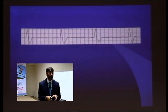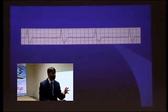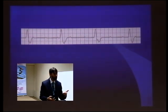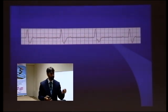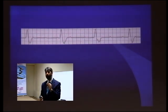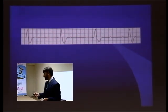Always judge when assessing AV block: is the QRS narrow or broad? Narrow means the AV node is the escape focus, and broad means the ventricle is the escape focus.